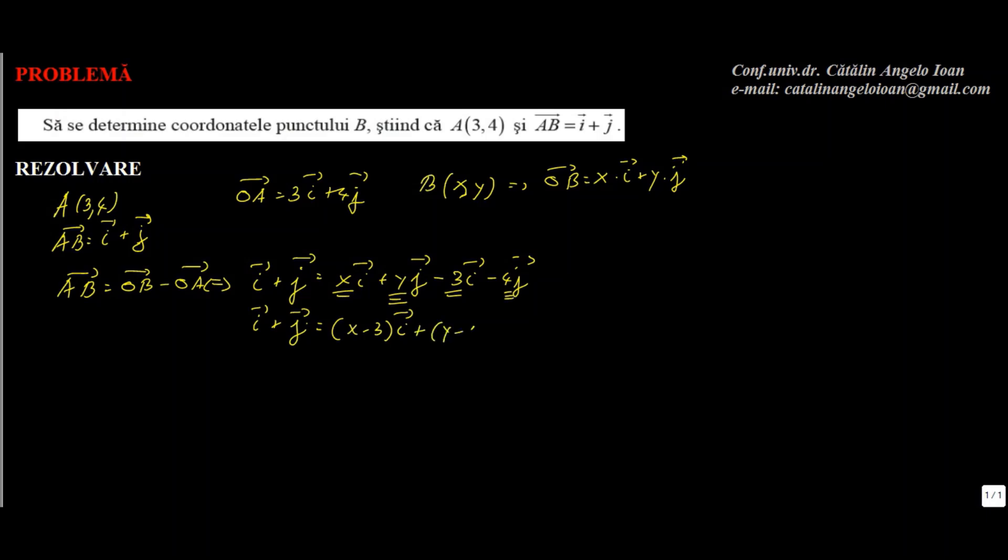Când doi vectori sunt egali, coeficientul lui i e egal cu coeficientul lui i și coeficientul lui j e egal cu coeficientul lui j. Deci rezultă x minus 3 egal cu 1 și y minus 4 egal cu 1, de unde rezultă x egal cu 4, y egal cu 5. Răspunsul final al problemei: B mare are coordonatele 4 și 5.